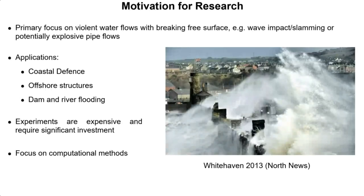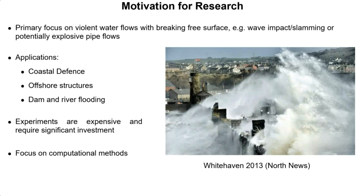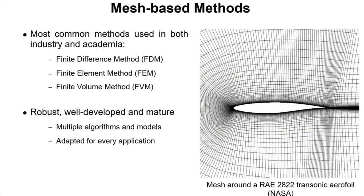Our primary focus as a research group here in Manchester is on violent water flows with a breaking free surface, such as wave impact, slamming, or explosive pipe flows. There are many applications, mostly on coastal and defense of coastal structures or offshore structures, but we also have applications in dam and river flooding or the nuclear industry. Doing experiments on these kinds of flows is expensive because we have large runtimes, large scales, and require significant investment. So we have focused on computational methods.